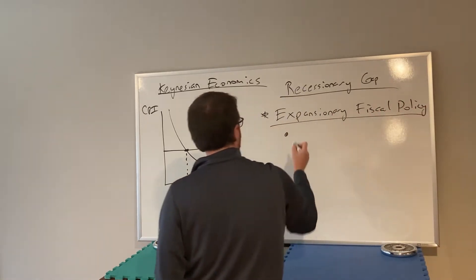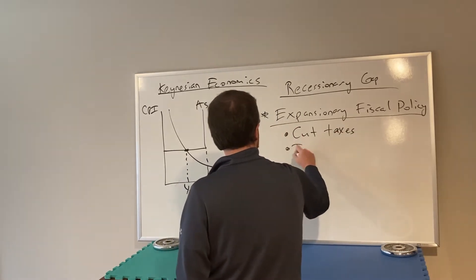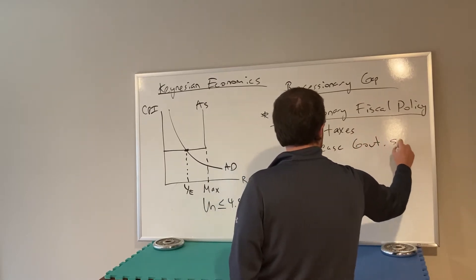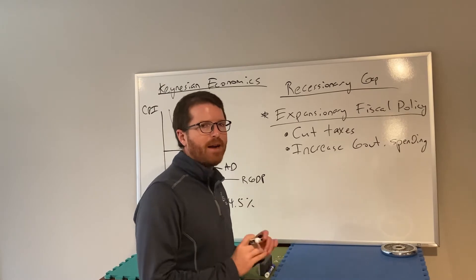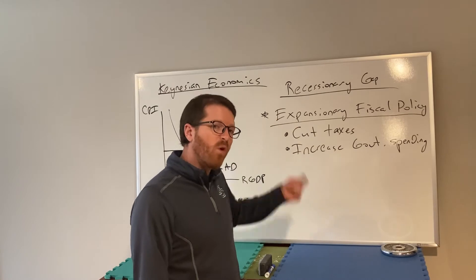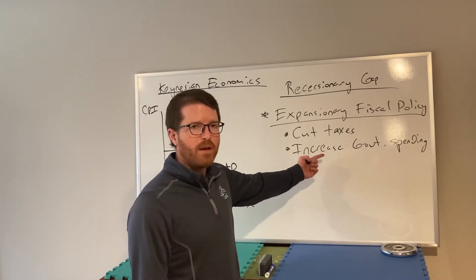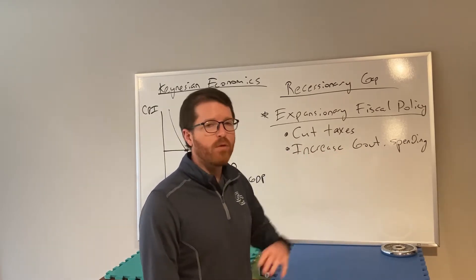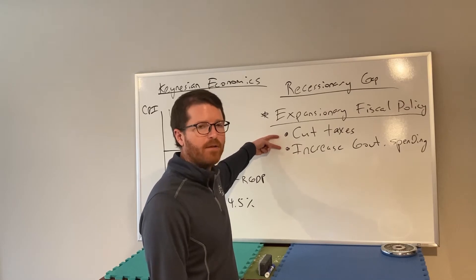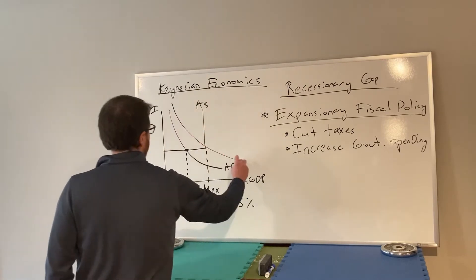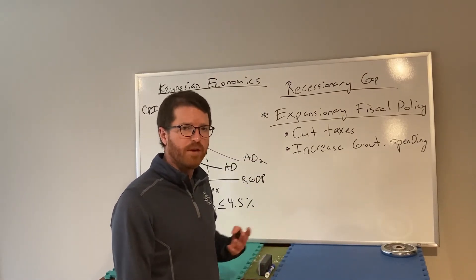Expansionary fiscal policy means that you do one of — or perhaps both of — these two things: you cut taxes, or you increase government spending. These two policies, despite being different, will have a very similar effect. The whole idea is to get money into people's pockets to spend. If you cut taxes, people will take home more of the money they're earning, and they'll spend that money to help stimulate the economy. If the government increases spending by hiring someone, that person will have more money and will in turn spend it, stimulating the economy. When done correctly, this boosts aggregate demand. Of course, an obvious downside is that it will create governmental debt.